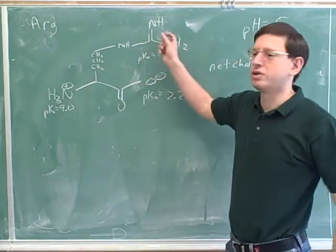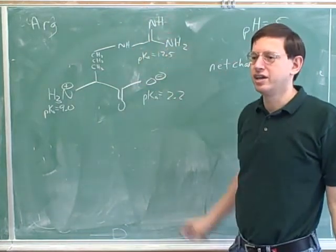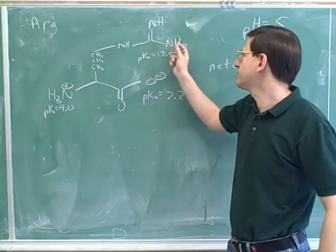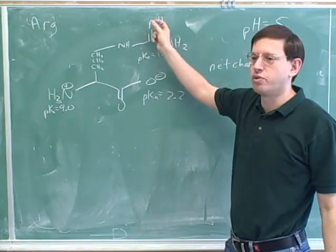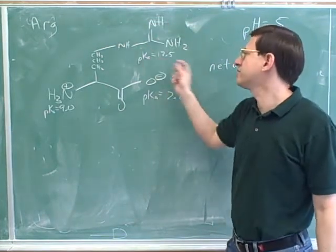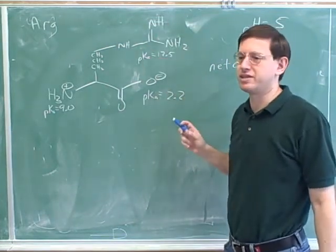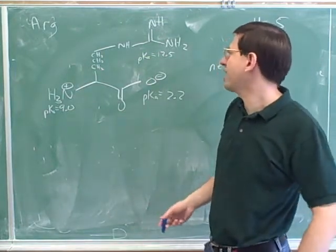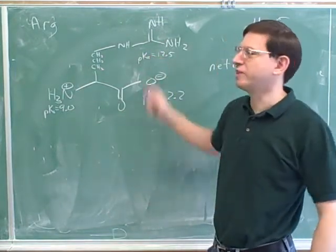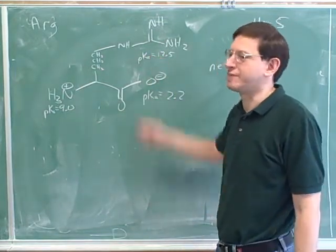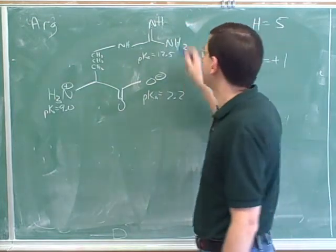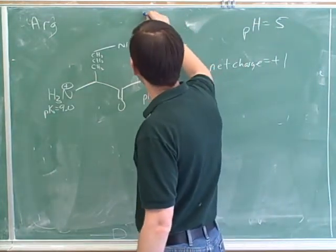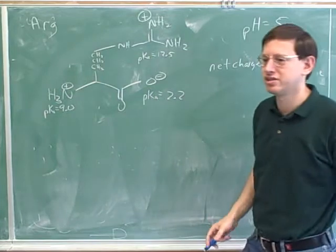This is what neutral arginine looks like. Neutral arginine has one hydrogen here, two hydrogens here, and one hydrogen here — that way all the nitrogens have three bonds. You can just copy this out of the table, but you have to be careful to copy it correctly. Then if you're protonating it, you put in one more hydrogen here and add the positive charge.